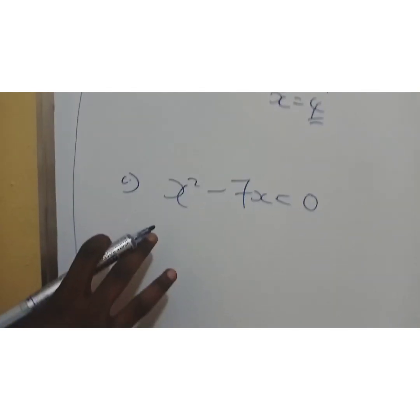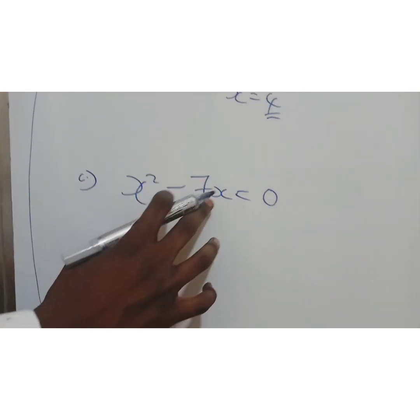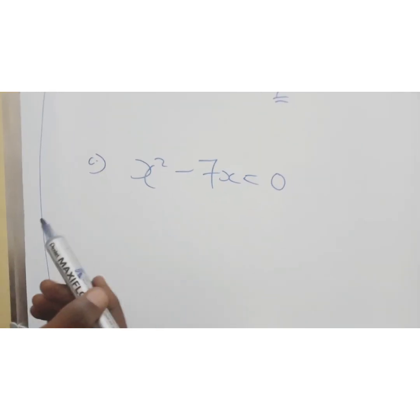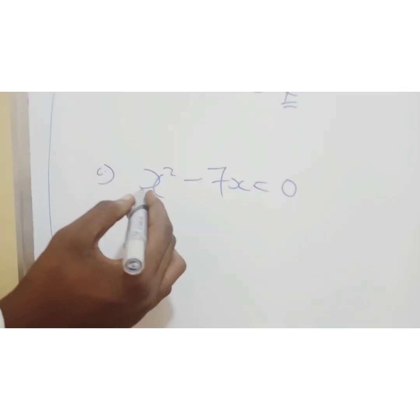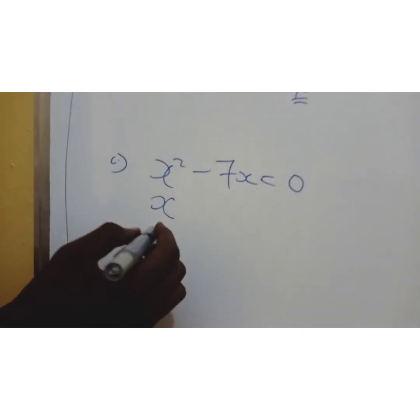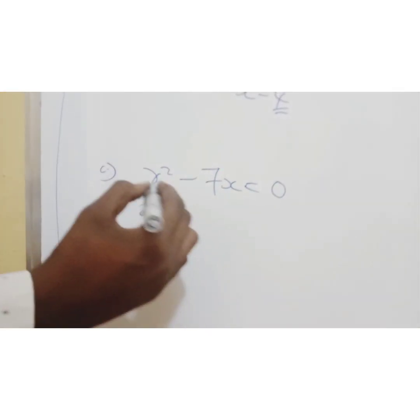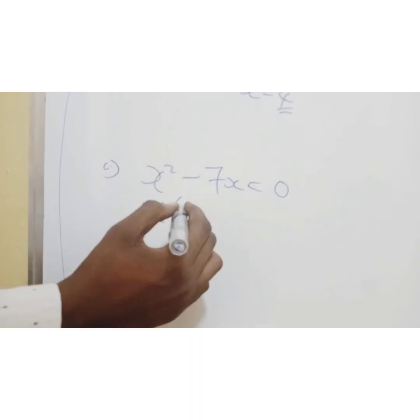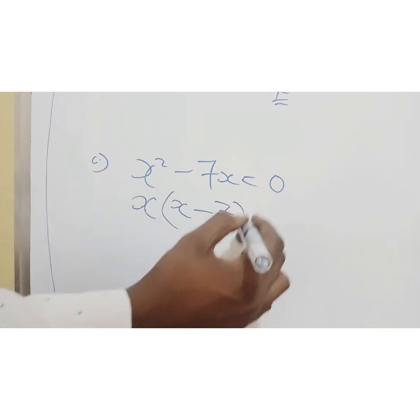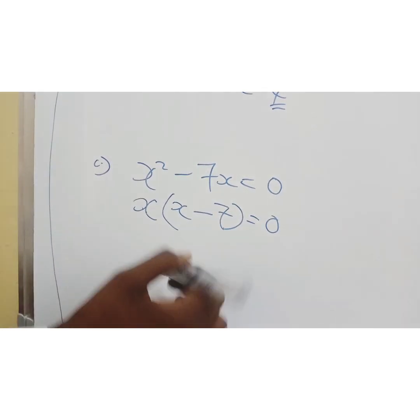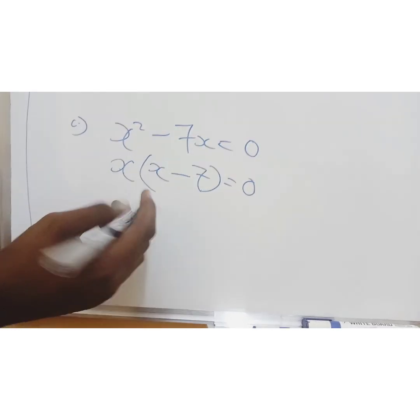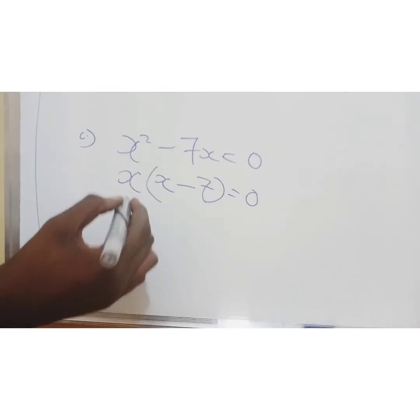We have C. x squared minus 7x equals 0. What we do here, we factorize. To factorize means we find what's common. So what's common here is x. So what's common we put outside the brackets. x into x squared is x minus x into 7x is 7. It's equals to 0. We cancel this x. So we have 7.